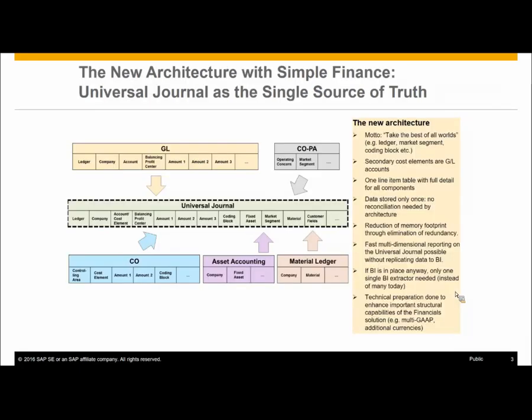Now this is the picture of the brand new world where all applications post to the universal journal. The universal journal is where all journal entries from all accounting applications are stored, and this is the table ACDOCA. ACDOCA basically stands for: AC stands for accounting, DOC stands for document, and A for actual — so it's accounting document actuals.